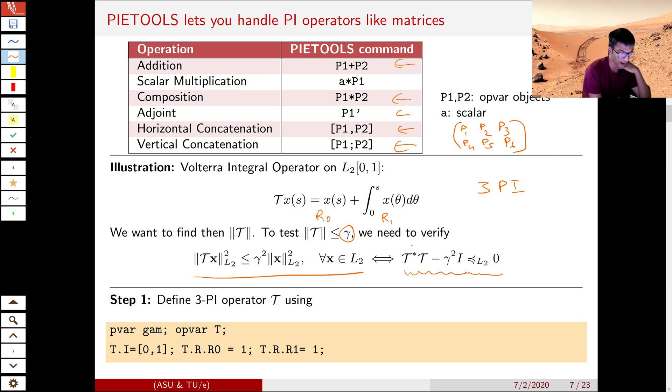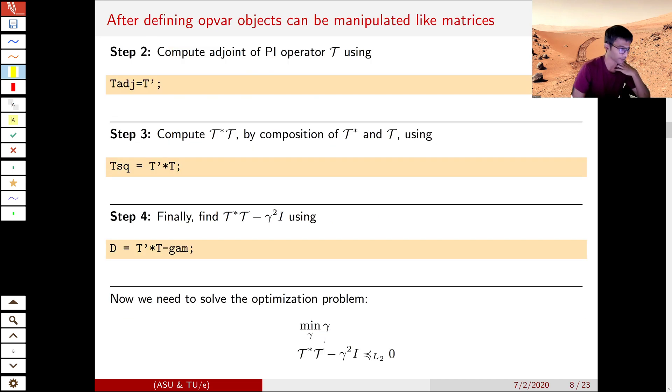inequality. We need to first find this operator. For that, we will use PIETOOLS. First, we define the OPVAR T. Then we declare what the interval is, what the components are. Once that is done, we can just find the operator that needs to be constrained using a simple command just like this.